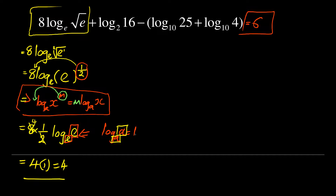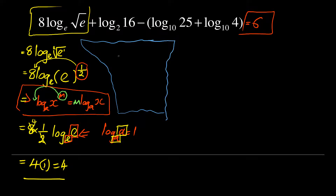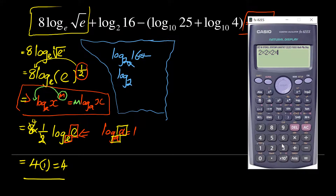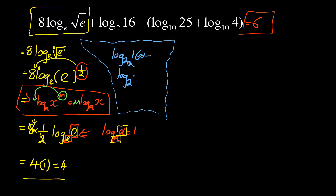So far so good — we've gotten that the first part equals 4. Now let us move on to the next one: log base 2 of 16. This one is not complicated. The hint is the base of 2, so I must find 16 in terms of 2. Using a calculator: 2 × 2 × 2 × 2 — that is four times — so 16 equals 2 to the power of 4.